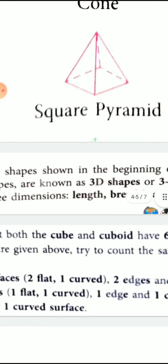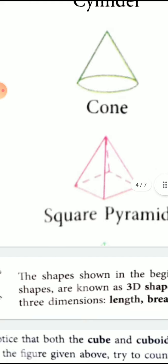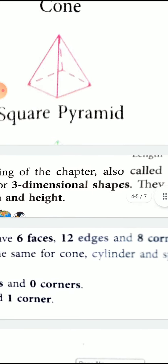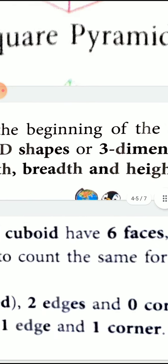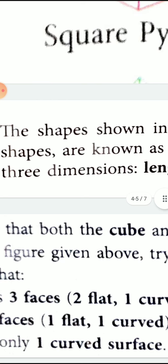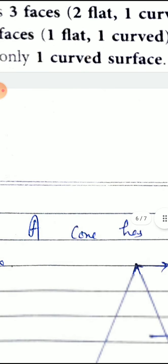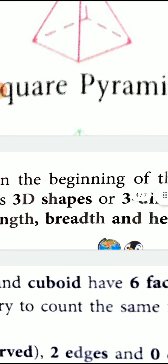The shapes shown in the beginning of the chapter are all 3D shapes. What is the difference between 2D shapes and 3D shapes? Actually, in 3D shapes there are three dimensions. What are these three dimensions? These are length, breadth, and height.